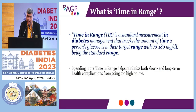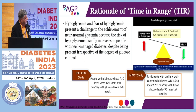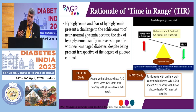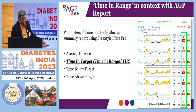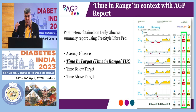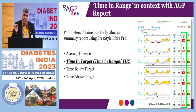Time in range is the amount of time that an individual is spending within a pre-specified range. The recommended range for people with type 1 and type 2 diabetes is 70 to 180. The rationale of time in range has been established through various studies showing a correlation: the more time spent in range, the lesser the chances of complications. In the AGP report you see time in range, time below range, and time above range — how much time was spent within range, above, and below — both for individual days and as a total for the 14-day period.